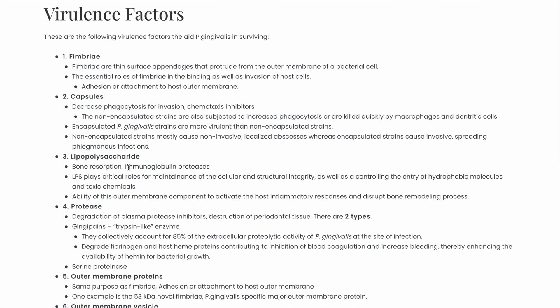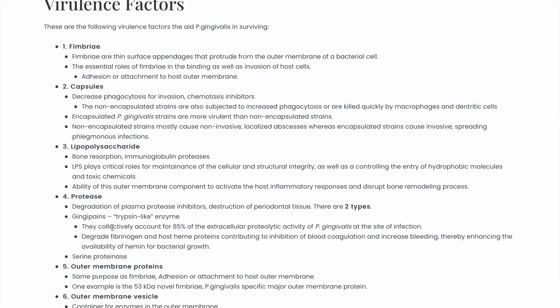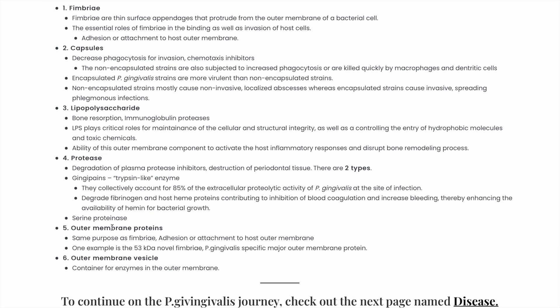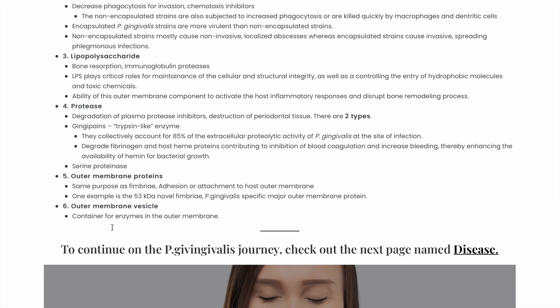To list a few: it has fimbriae, which are surface appendages that allow it to adhere to cells; it has a capsule to protect it from phagocytosis; lipopolysaccharides to maintain its structure; and even proteases such as gingipains, which degrade fibrinogen and inhibit blood coagulation.